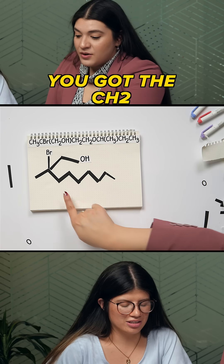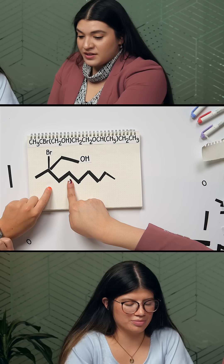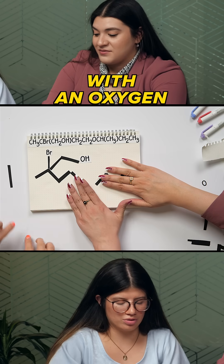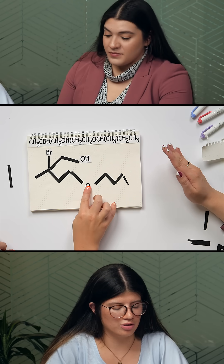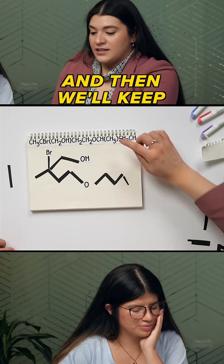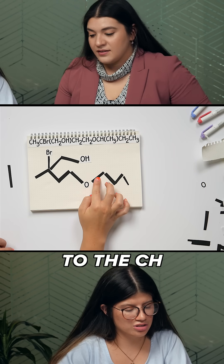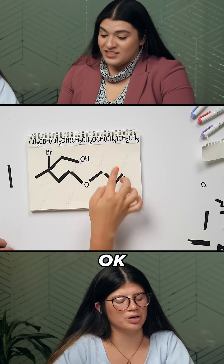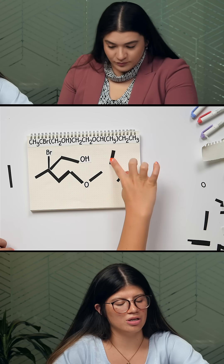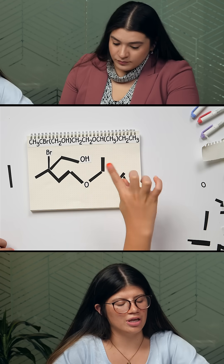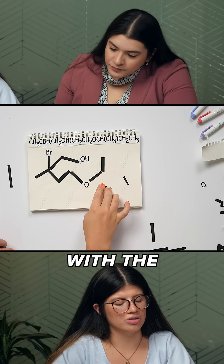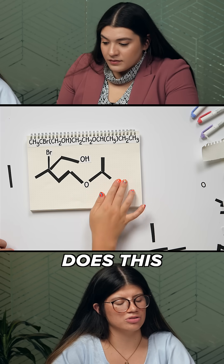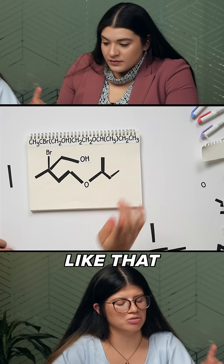Now that we have that, you got the CH2, CH2 — we're interrupted with an oxygen. So we'll have to be interrupted with an oxygen, just right here. And then we'll keep going from here to the CH like this. I guess this one would be branching off of this one, right? So then it would look like that. And then we continue with the CH2 over here, and then that one just branches off of it like that.